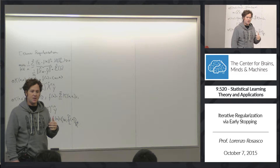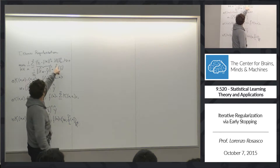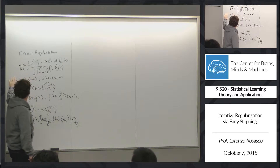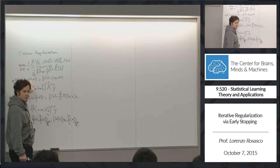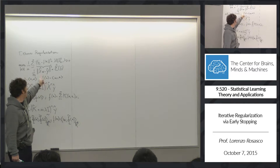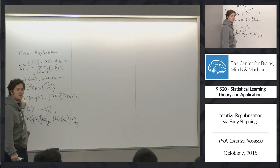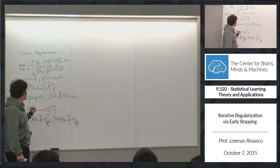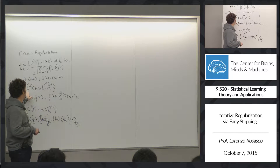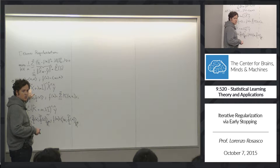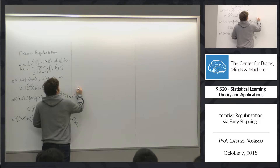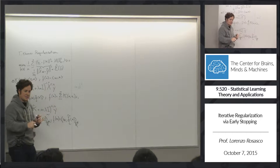A recap of what we did next: we looked at least squares, sticking to a Tikhonov-like function — penalized empirical risk — focusing on the square loss. We first looked at the case where the kernel is the linear kernel, just the inner product. In this case, the functions are linear, we re-parameterize in terms of w, and the solution is given by a linear system. The complexity of solving this system, where the data matrix x has n rows and d columns, is nd².